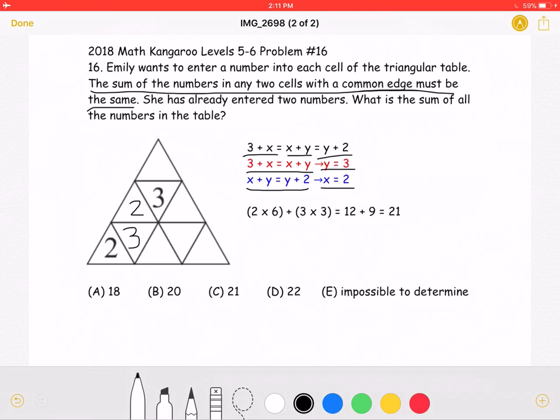Therefore, we know that the sum of any two cells with the common edge must be 5, 2 plus 3.